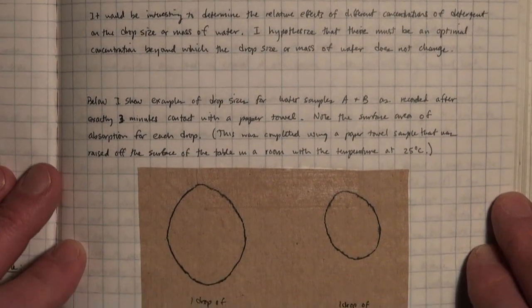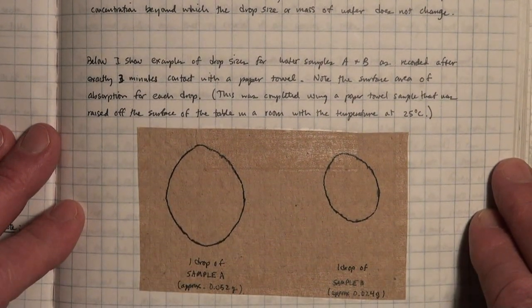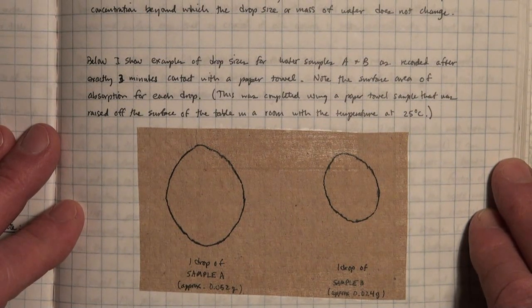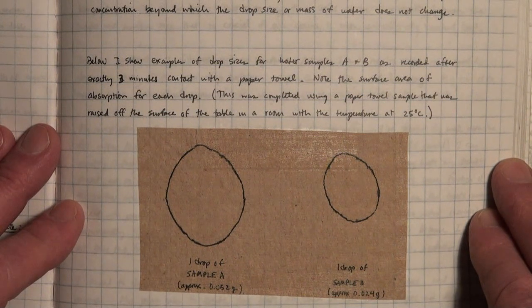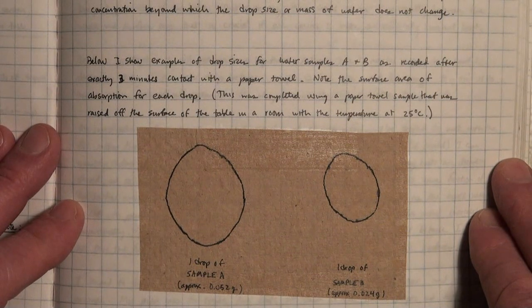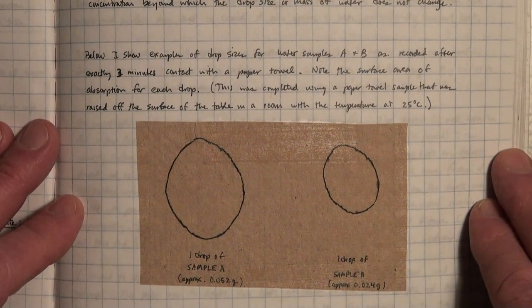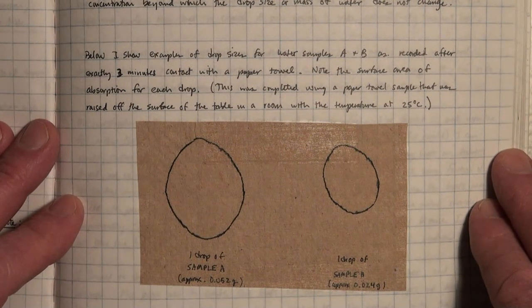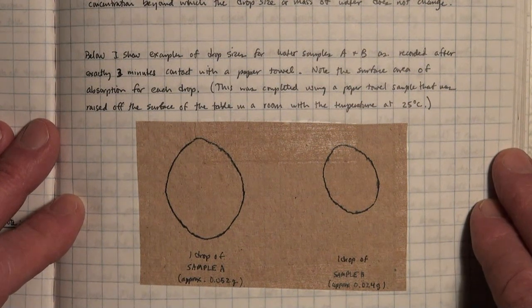Below, I show examples of drop sizes for water samples A and B as recorded after exactly three minutes in contact with paper toweling. Note that the surface area of the absorption for each drop was completed using a paper towel sample raised off the surface of the table in a room where the ambient temperature was 25 degrees C. The figure here shows that pretty well.